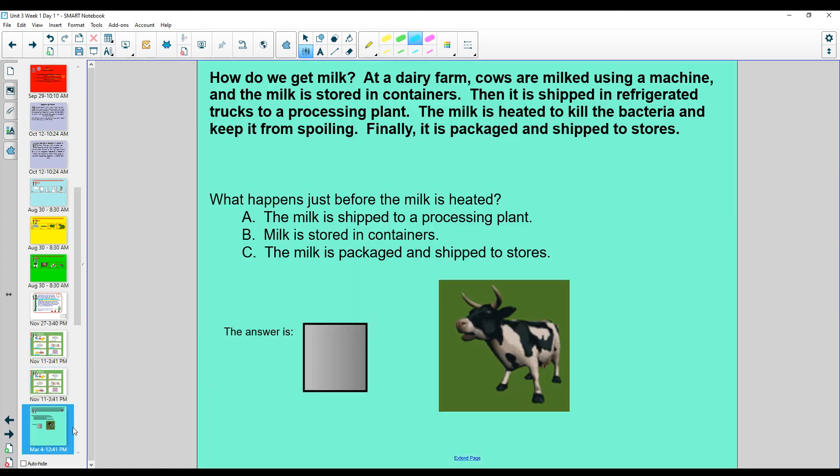Alright, let's do one more for practice. How do we get milk? At a dairy farm, cows are milked using a machine, and the milk is stored in containers. Then, it's shipped in a refrigerated truck to a processing plant. The milk is heated to kill the bacteria and keep it from spoiling. Finally, it's packaged and shipped to stores.